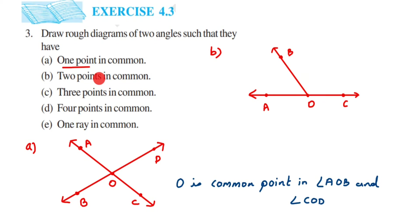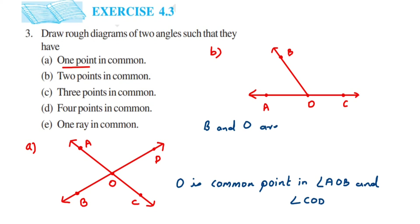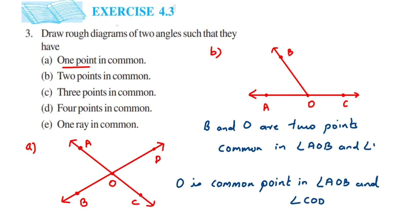They are asking for two points in common. If you see these two angles AOB and BOC, there are two points common: one point is O and another point is B, because this ray OB is common for both angles. So O and B are the two common points in angle AOB and angle BOC.